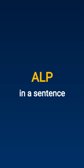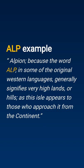How to use Alp in a sentence? Alp example: Alpian. Because the word Alp, in some of the original Western languages, generally signifies very high lands, or hills, as this isle appears to those who approach it from the continent.